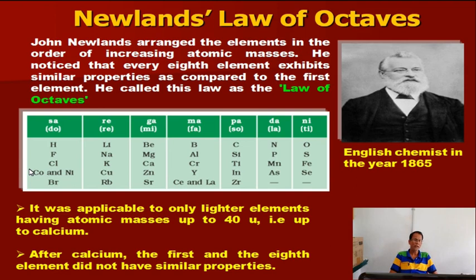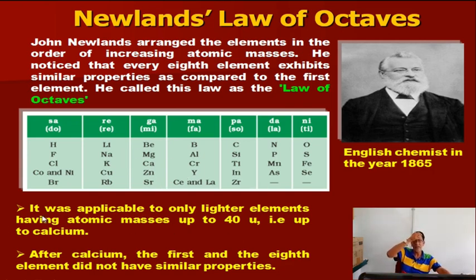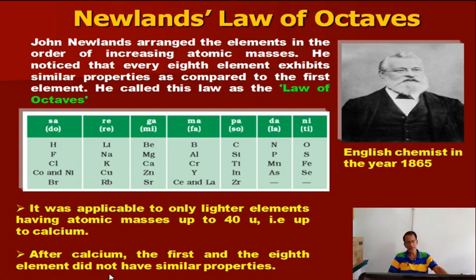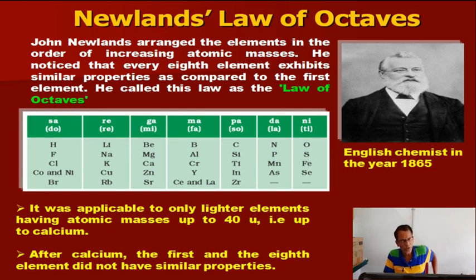Accordingly, he arranged the elements in increasing order of atomic mass. What are the drawbacks? It was applicable to only lighter elements, not for heavier elements. After calcium, the first and the eighth element did not have similar properties — elements were not fitted in the table. Almost all elements discovered at that time were not included in the table. This is the important drawback of Newlands' Law of Octaves.